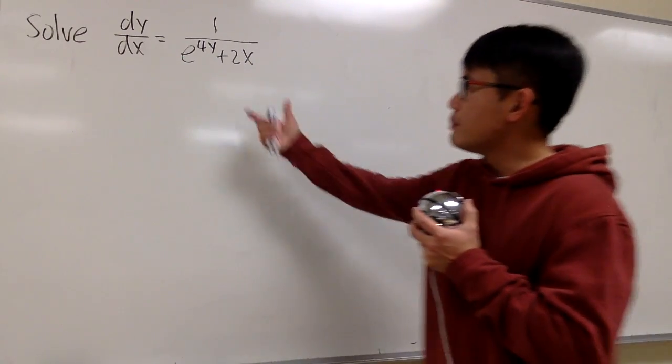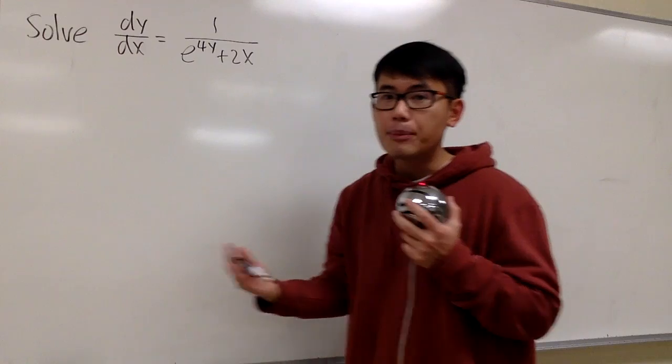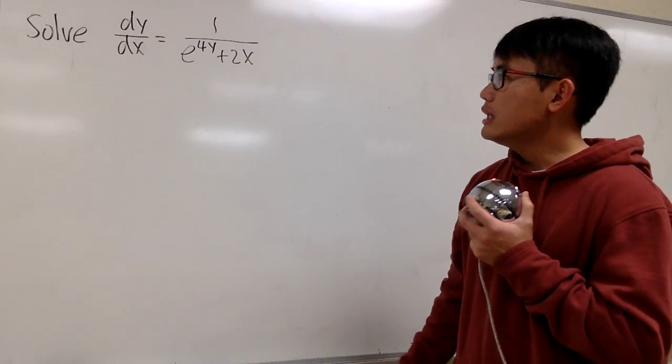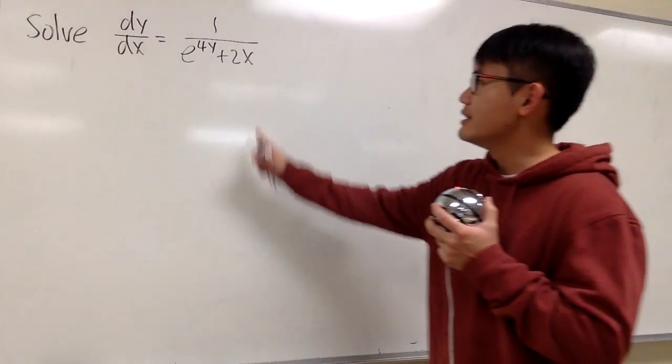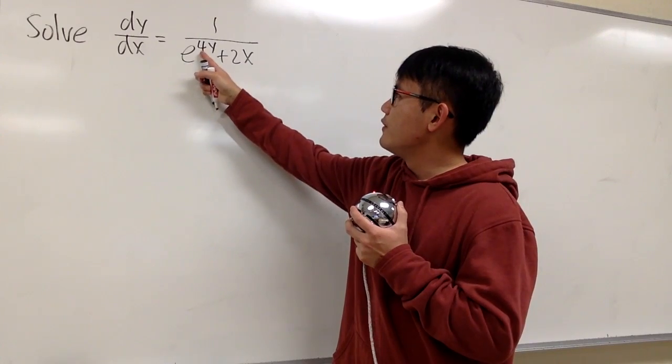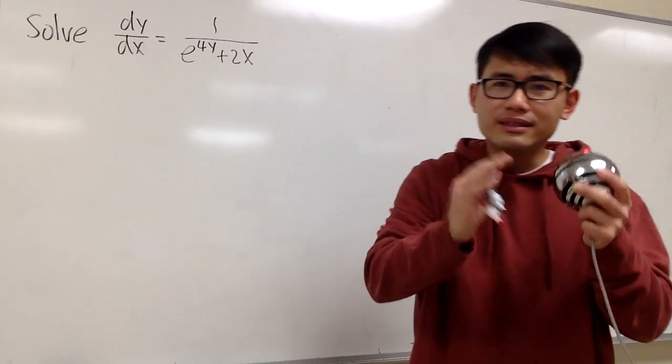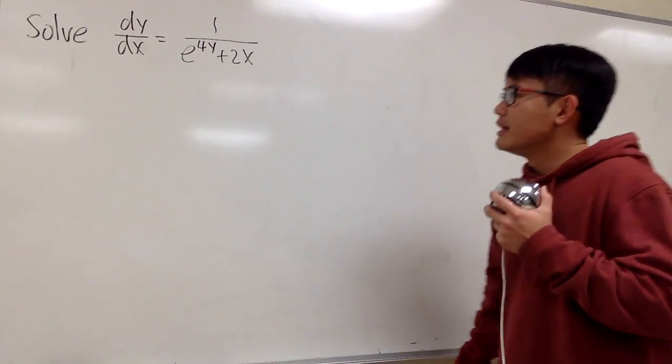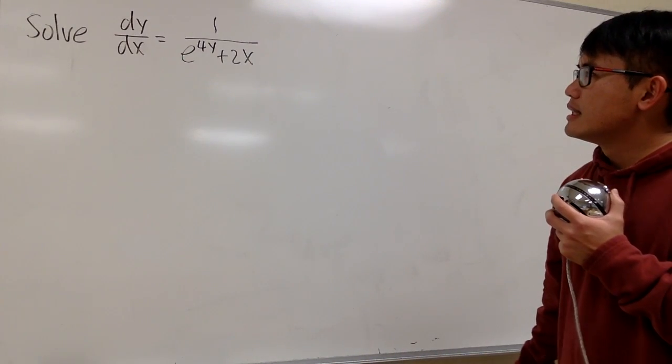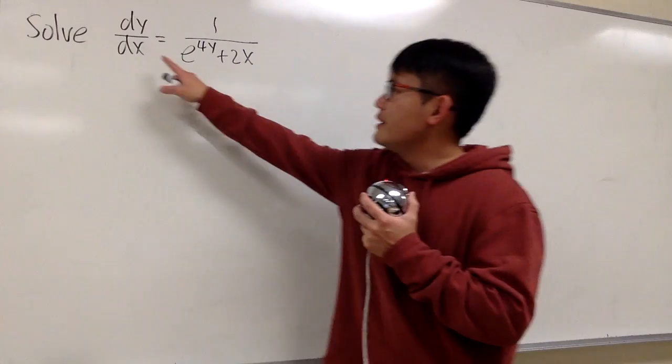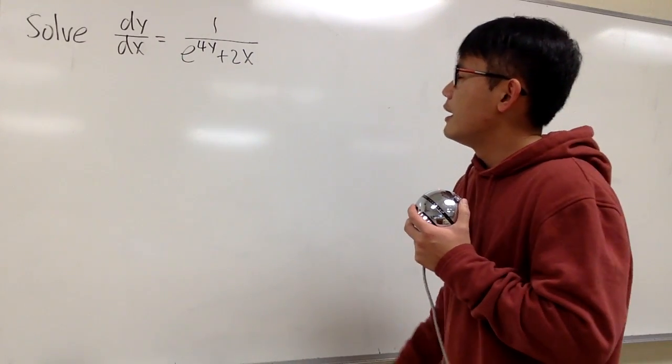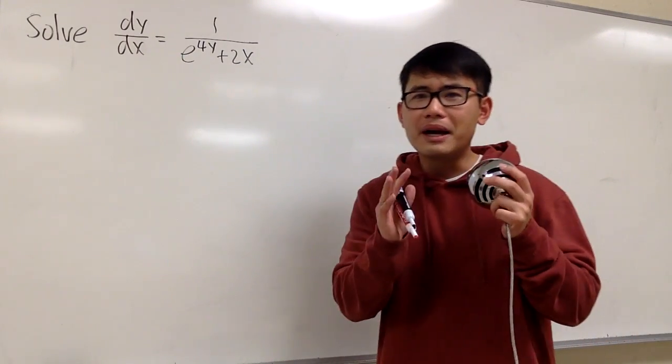If I multiply this on both sides and try to separate the variables, it is not going to work because we have e^(4y) + 2x. I cannot factor out all the y's together, all the x together. You can try that. We have dy/dx right here, and we don't have the y on the side.